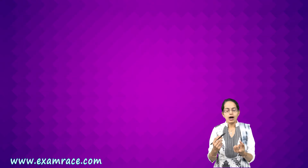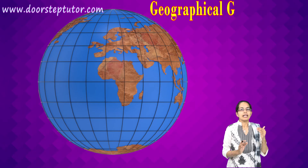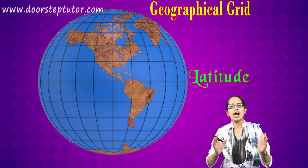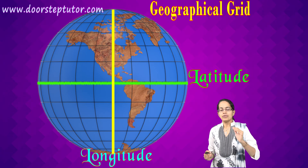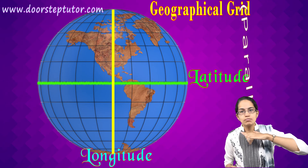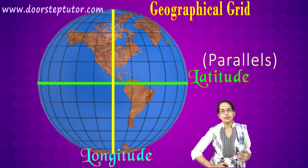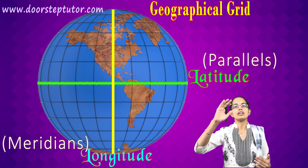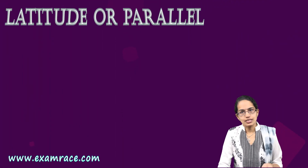When we talk about understanding the earth or movement from one country to another, there needs to be some standard, and because of that there was a need for the geographical grid to come in. Therefore we have the concept of latitudes and longitudes — these are the horizontal and vertical lines. The horizontal lines are known as parallels or latitudes, and the vertical lines are the great circles or meridians.